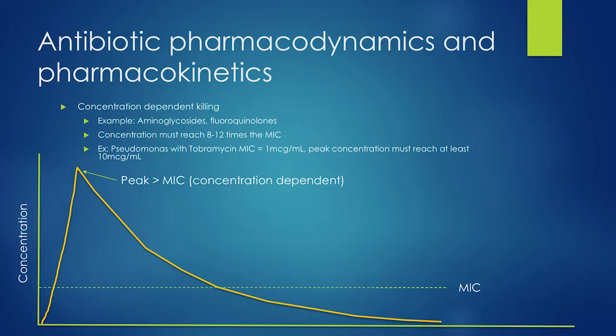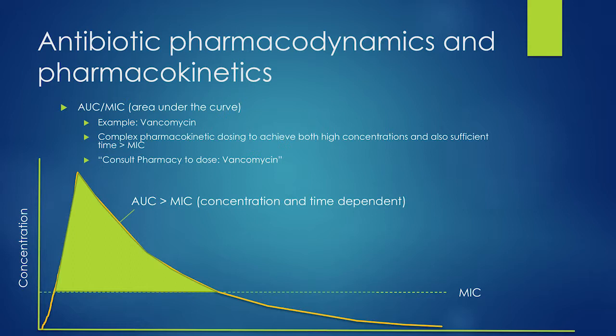Aminoglycosides have very poor lung tissue penetration. A common 2 mg/kg dose of gentamicin — what Epic might automatically suggest — won't get you anywhere near a high enough concentration to truly treat a pneumonia with gentamicin or tobramycin.